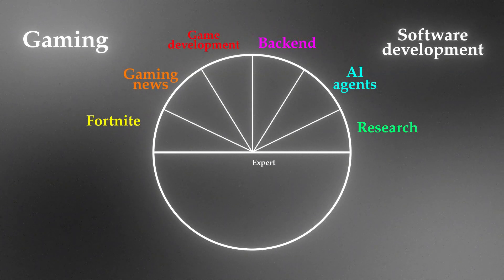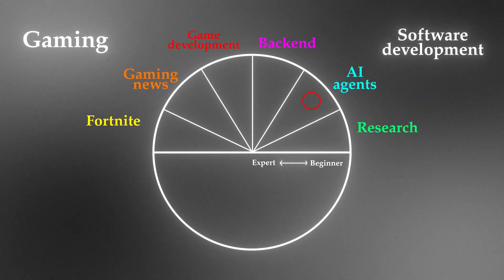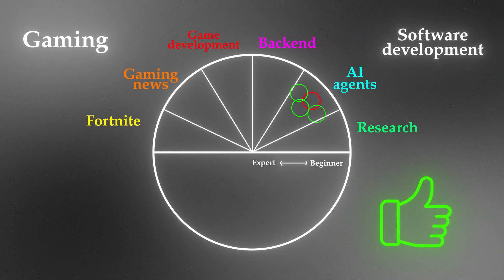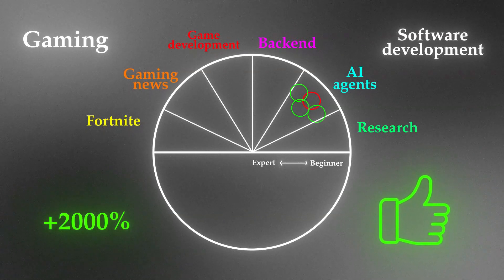From inside the circle to outside the circle represents expert-level content versus beginner-level content. Let's say I want to make a tweet and I'm used to tweeting about AI agents — it's going to land somewhere around that area. X will then recommend it to people close to that niche: people interested in research, more expert-level users, maybe backend people. If they love it, I get a positive score on that tweet.